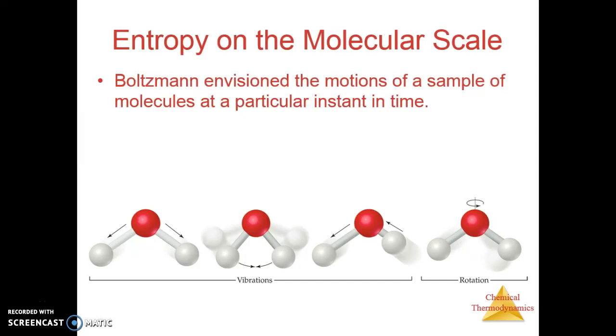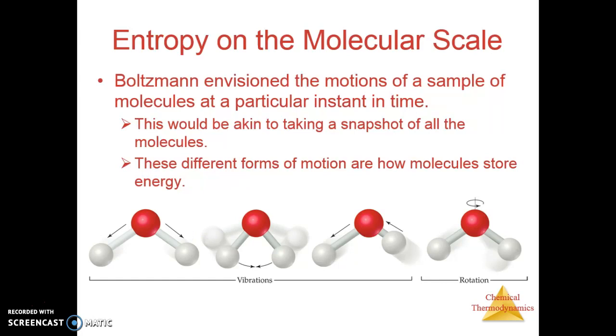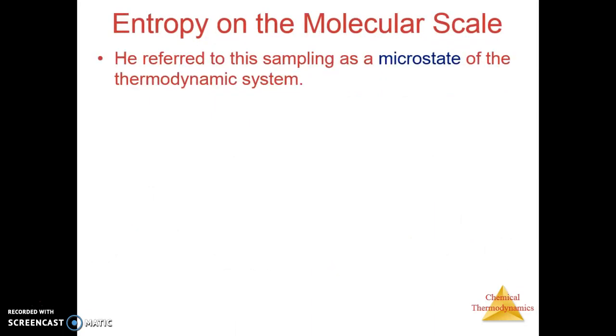Boltzmann came up with the idea that each different position, each different motion, represents a different what he referred to as microstate. If you were to take a snapshot of what the molecules are doing, the more snapshots you can have that are unique, the more motion the molecule has, the more entropy the molecule has. These different forms of motion are how the molecules are storing the energy.